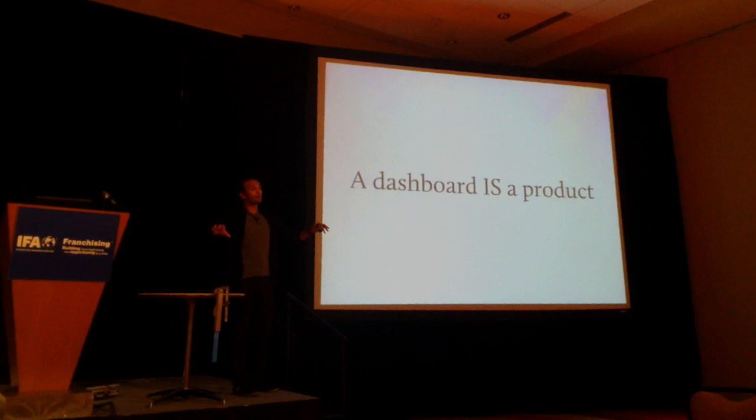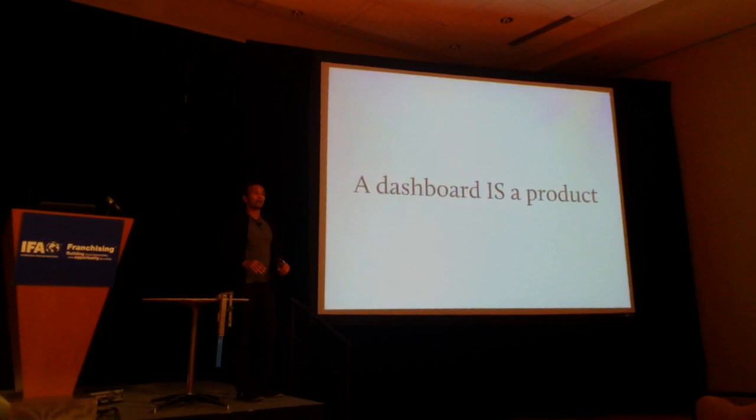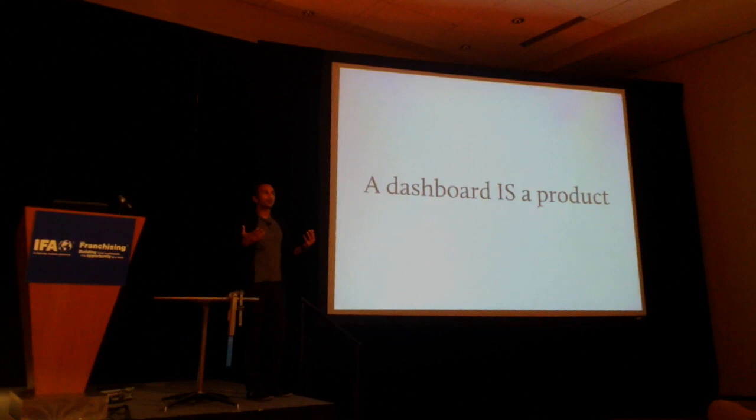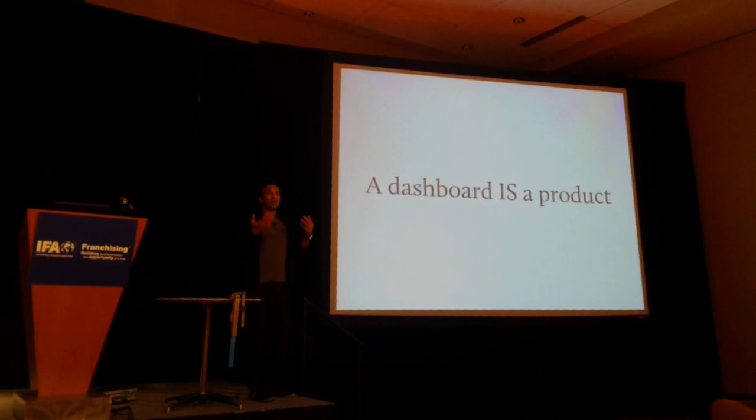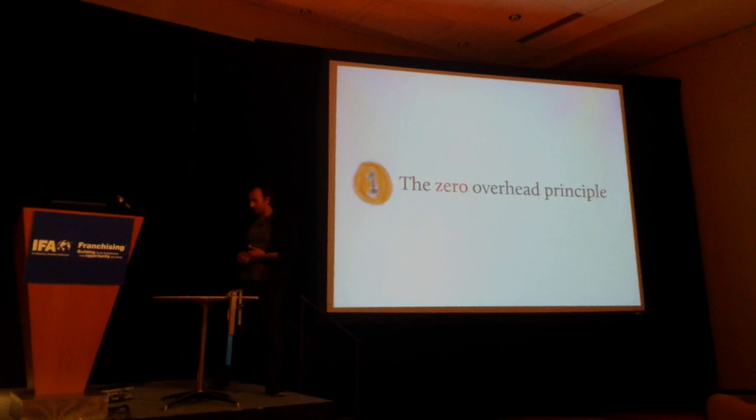Everyone in the company started to take responsibility for the data and take ownership of solving problems before management has to start asking about it. This is one of the big fundamental shifts from Silicon Valley — the idea of democratizing the data. Everyone has access to it. It gets a little uncomfortable at first, but when everyone has access, suddenly everyone can ask questions, get interesting insights, come up with hypotheses, and when something goes wrong, they're in position to take action. That gives us the agility to stay on the competitive edge.